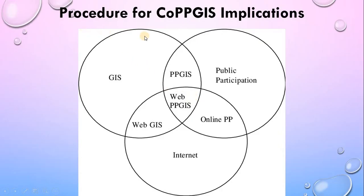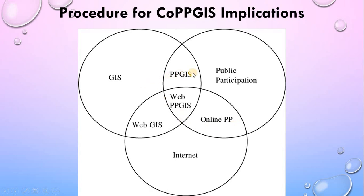What are the procedures for CopyBJS implications in crime mapping? CopyBJS implications come together with GIS, meaning we must know what kind of crimes have occurred at various places. We should have internet access to confirm it, and then the public must confirm and explain their tips and what kind of scenario occurred there. GIS and internet come together with web GIS; public participation with internet becomes online public participation, and then public participation in GIS becomes PPGIS.